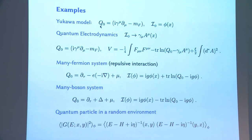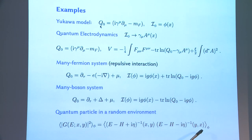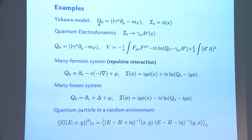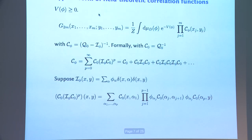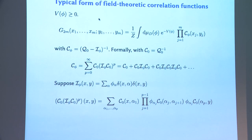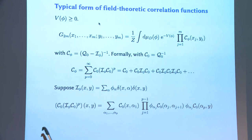For the quantum particle in a random environment, one also has the conjugate complex structure, with y,x instead of x,y. It's again of the form where we have a resolvent evaluated, and H will contain phi because of the randomness. You can expand all this in Feynman graphs. The Feynman graphs look a bit different because the vertices have different structure, but the general idea is the same — a particle line going through, and the phi's get integrated as particles interact.